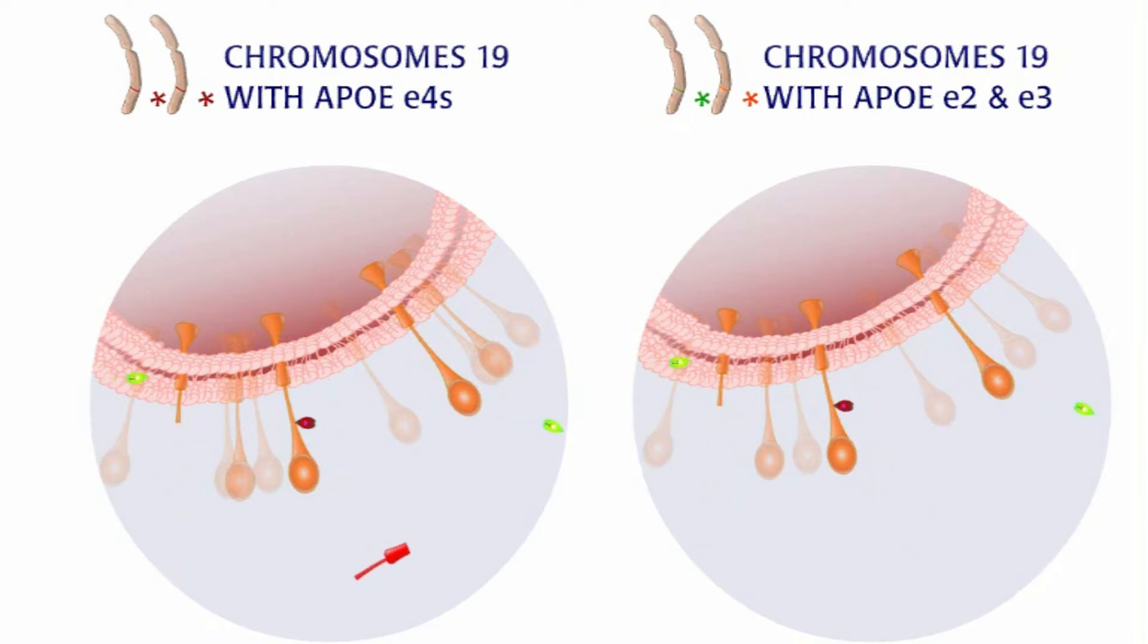One theory is that APOE does not allow the plaque-causing beta amyloid proteins to be cleared from the brain.